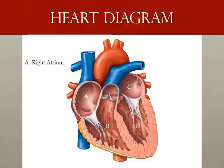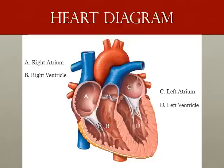The top chamber, labeled A, is the right atrium. Blood flows from the right atrium to the right ventricle, which contracts and pumps the blood out to the lungs. The blood picks up oxygen in the lungs and comes back to the left side of the heart. The oxygen-rich blood enters the heart through the left atrium, then is released into the left ventricle, which pumps the blood out of the heart and to the body through a large artery called the aorta.